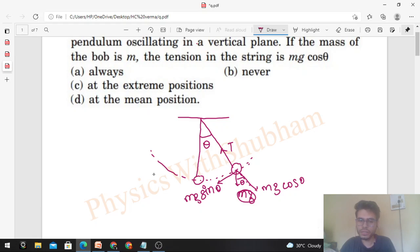So that is T minus mg cos θ, which should be equal to mass times acceleration. Now what is the acceleration? If we consider the pendulum is moving with velocity v, then that will be v²